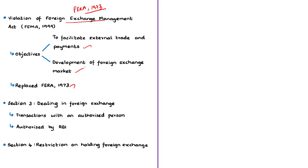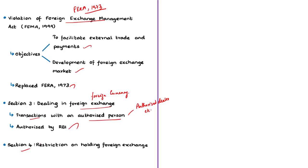FEMA deals with the regulation and management of foreign exchange, where foreign exchange means foreign currency. Section 3 states that transactions of foreign exchange or foreign security can take place only with authorized persons — persons authorized by the Reserve Bank of India. Authorized persons can be an authorized dealer, a money changer, or an offshore banking unit. Section 4 puts certain restrictions on holding foreign exchange, and Section 5 talks about restrictions on current account transactions, which include payments related to foreign trade, interest on loans, and expenses for foreign travel.